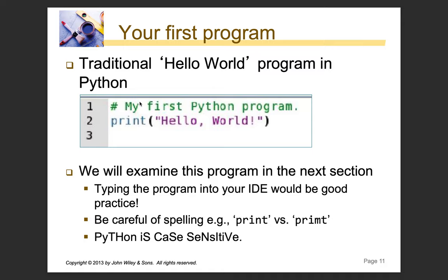Let's look at our first program. The traditional first program for computer scientists to write is a Hello World program. Line one starts with a hash symbol and says 'my first Python program'. Line two says 'print hello world'. Before we examine it, pause the video and type this out in your new file. Be careful with spelling — make sure you spell print correctly, and note that Python is case sensitive: print with a capital P means something different to print with a lowercase p.